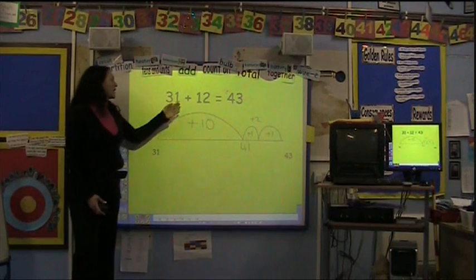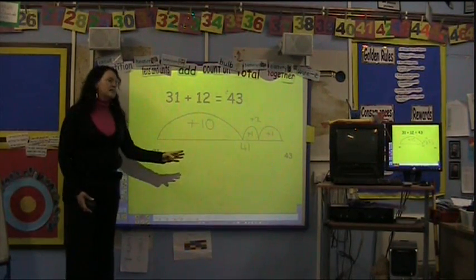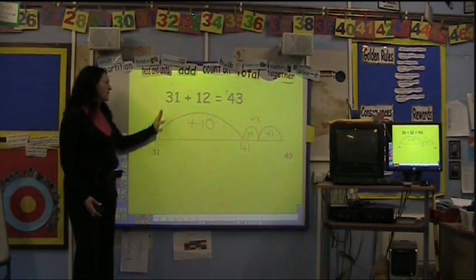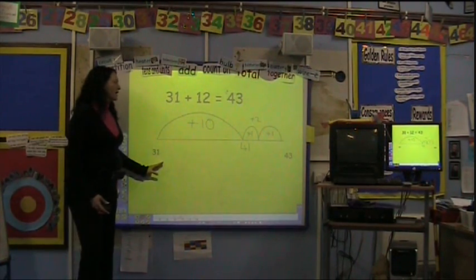We call it the empty number line, so the children can then make their own number lines. So if we take a sum, for example, 31 add 12, and the children have drawn their empty number line, what we would like them to do is write the first number of sum at the beginning of the number line.